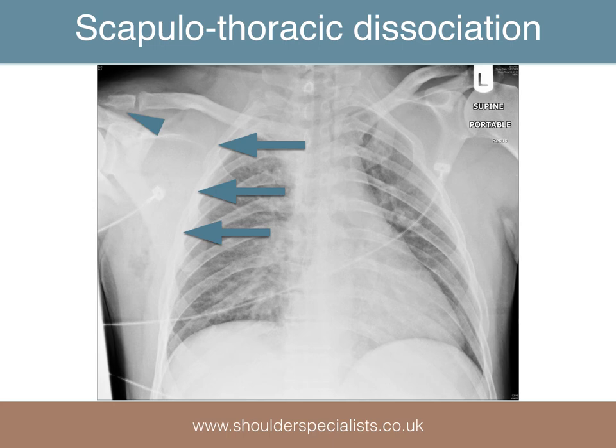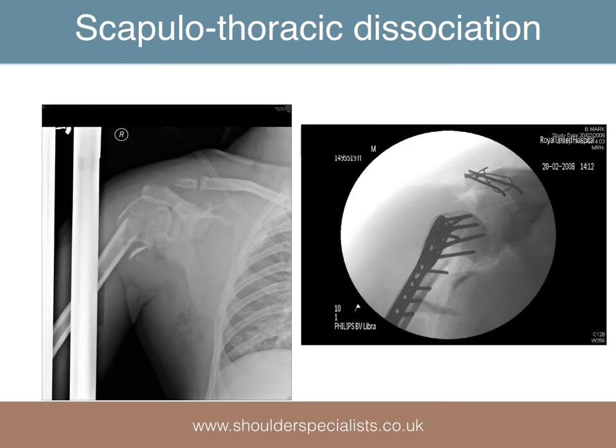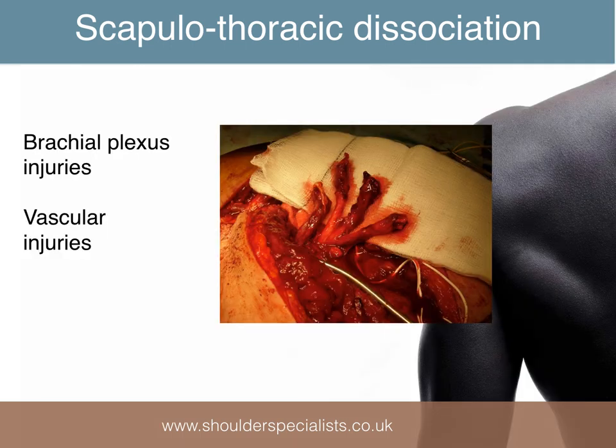In this example, the scapula can be seen to be sitting laterally, with a fracture of the acromion and proximal humerus. The bony injuries were adequately fixed, as was the vascular injury. Unfortunately, the nerve root disruptions proximal to the plexus were not repairable.